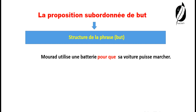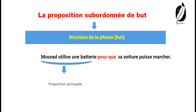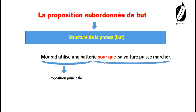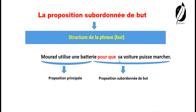Pour exprimer le but dans une phrase, on utilise des phrases complexes. On a vu dans les vidéos précédentes les composantes de la phrase composée. Cette phrase contient deux parties majeures. La première, c'est la proposition principale : « Mourad utilise une batterie ». Et la deuxième proposition, c'est la proposition subordonnée de but : « Pour que sa voiture puisse marcher ». Elle s'appelle de but parce qu'elle exprime le but en utilisant le moyen « pour que ».